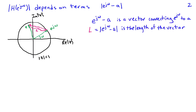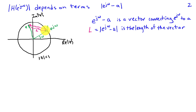What we're looking at is a vector connecting the point e^{jω}, which lies on the unit circle. This has unit magnitude and angle ω, so this point is e^{jω}. Then I have some other point a, and e^{jω} minus a is a vector connecting e^{jω} to a. When we take the magnitude of that, we're looking at the length of this vector, and that's what we're using in our frequency response magnitude.